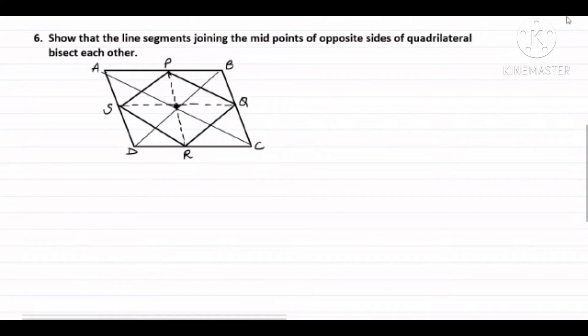Now, let us see question number 6 of exercise 8.2. The question is: Show that the line segments joining the midpoints of opposite sides of a quadrilateral bisect each other. So what is given? Let's write the given. ABCD is a quadrilateral, and P, Q, R, and S are midpoints of AB, BC, CD, and DA respectively. This is given to us.